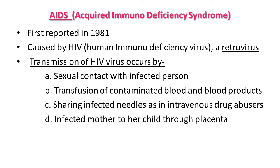The full name of AIDS is Acquired Immunodeficiency Syndrome. It was first reported in the year 1981 and after that it spread worldwide, killing a large number of people. The microorganism responsible for AIDS is HIV — Human Immunodeficiency Virus — which belongs to the group of retroviruses.